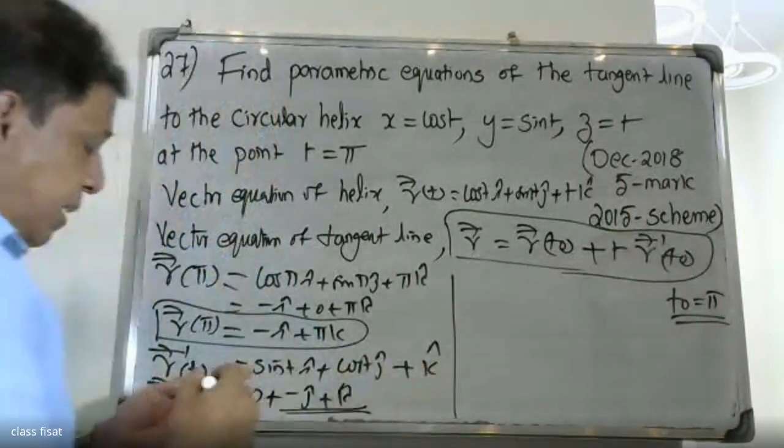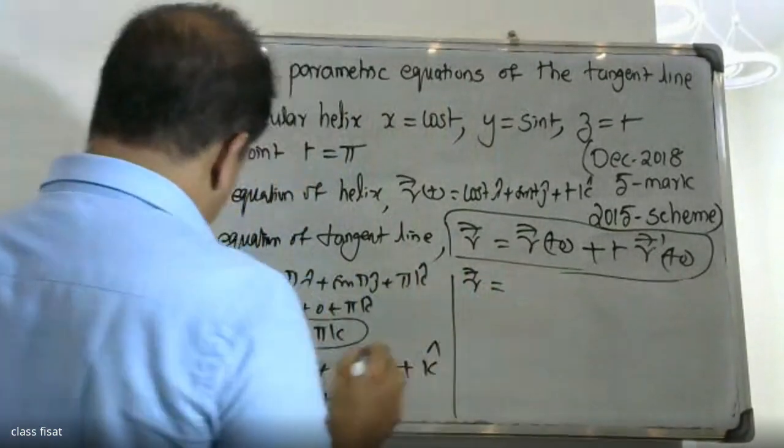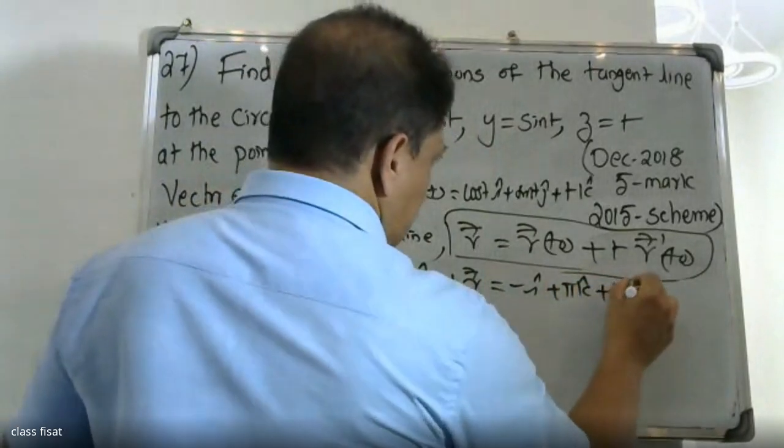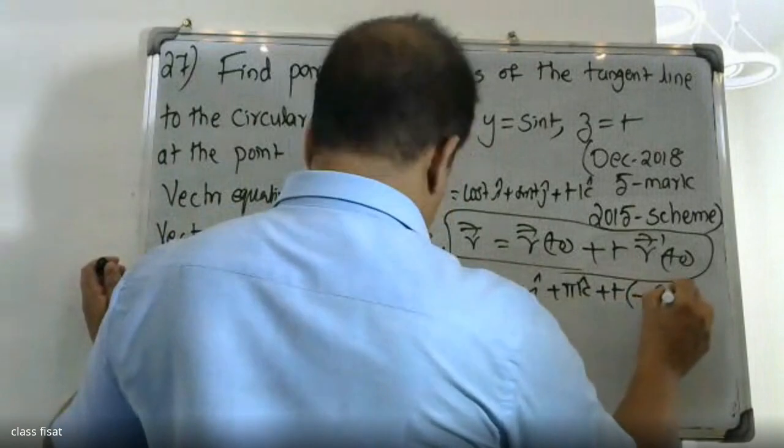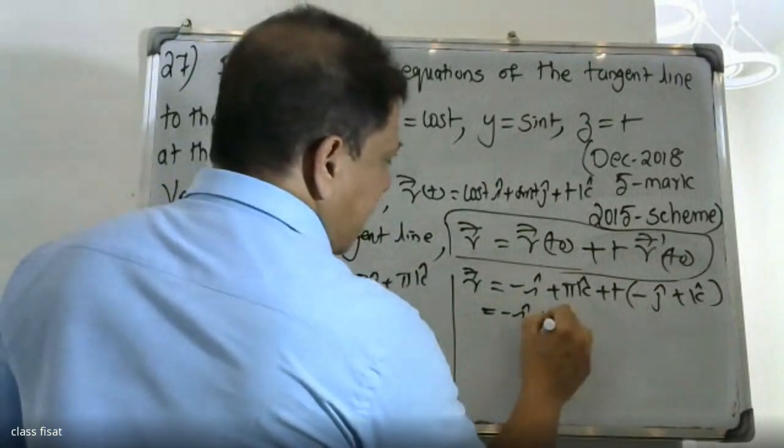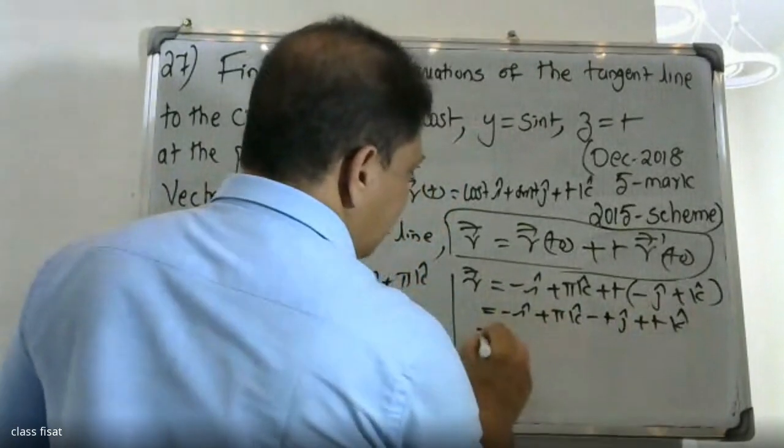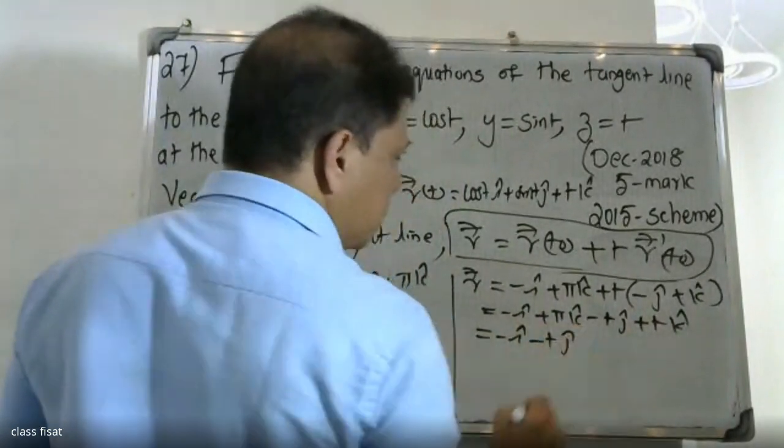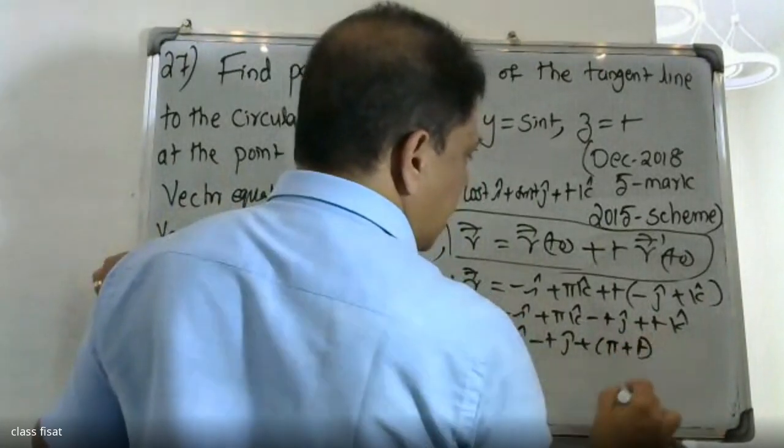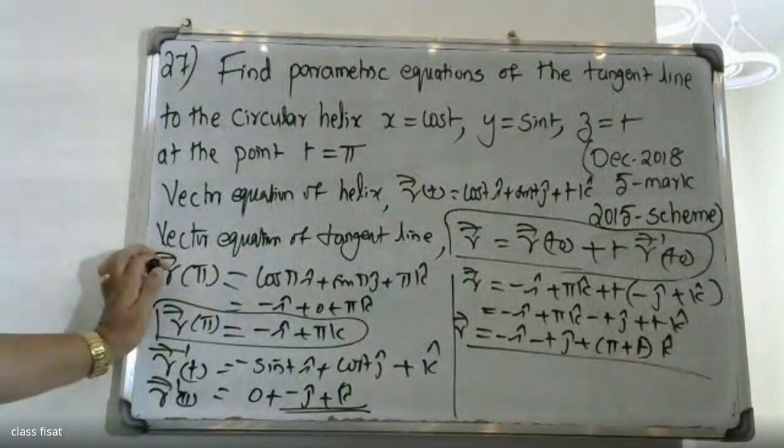Now substitute the values. Substitute R of t0 minus i plus π k plus t times minus j. R is minus i minus t j plus π plus t k. R equals minus i minus t j plus π plus t k.